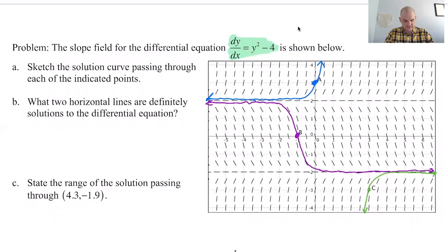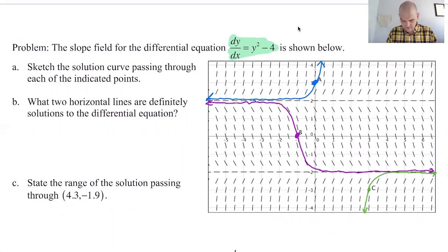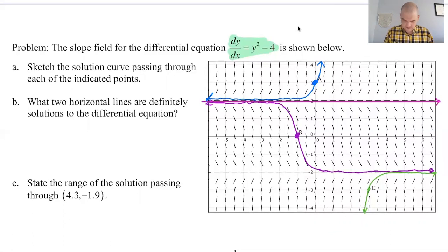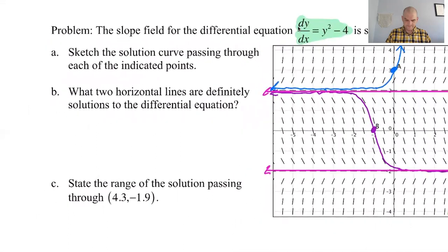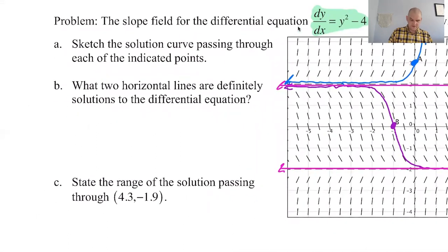Part B: what two horizontal lines are definitely solutions to the differential equation? Looking at the slope field, I can see the slopes are zero when y equals two and also down at y equals negative two — the slopes are always zero. You can see the horizontal lines clearly. So the answer is y equals two and y equals negative two.